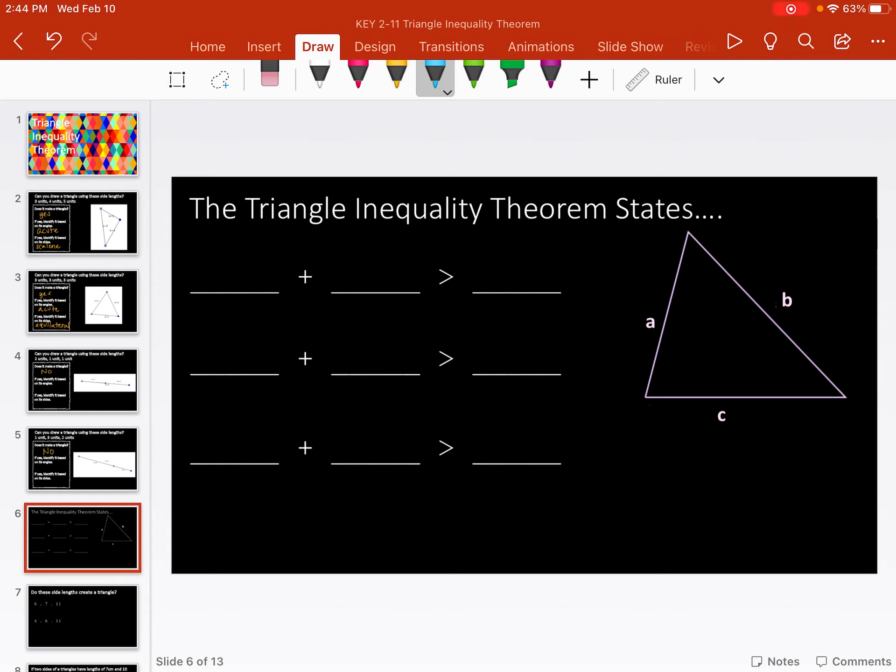And the theorem states, if you add, look at my triangle over here, I've got an ABC. So if you take side A plus side B, those have to be greater than side C. So if I take this side plus this side, it's got to be bigger than side C. Also, if I took side B and C and add those they have to be longer than side A.